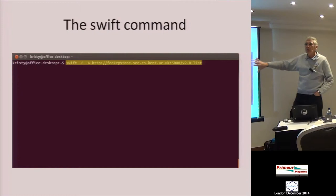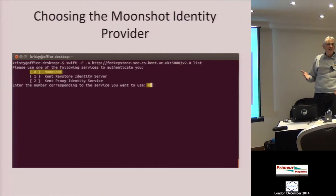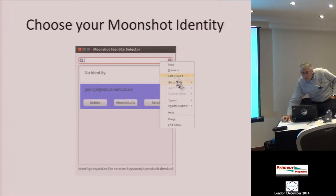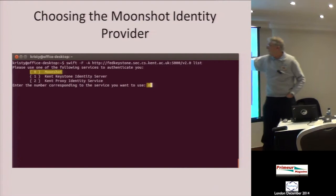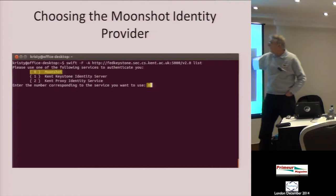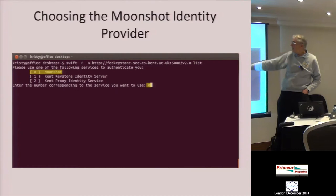Here is a demo — actually a screenshot, because this was done a year ago using the Havana release. We're now two releases further along, getting ready for the Juno release, so we don't have this software working anymore. With the command-line client you went to OpenStack, put in the URL, added a new keyword minus-F meaning federated login, and what came back was the list of trusted IDPs.